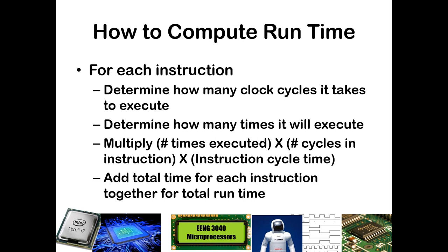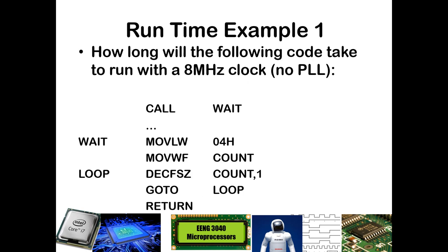So how do we compute the runtime? For every instruction in our code, we first need to determine how many clock cycles it will take to execute — is it a one-cycle or two-cycle command, or sometimes one and sometimes two? Then we determine how many times that command will be executed, and multiply those together. Then we get to our instruction cycle time — if we're not using the PLL, we multiply by 500 nanoseconds; if we are, we multiply by 125 nanoseconds. Then we simply add up the total time for all instructions together.